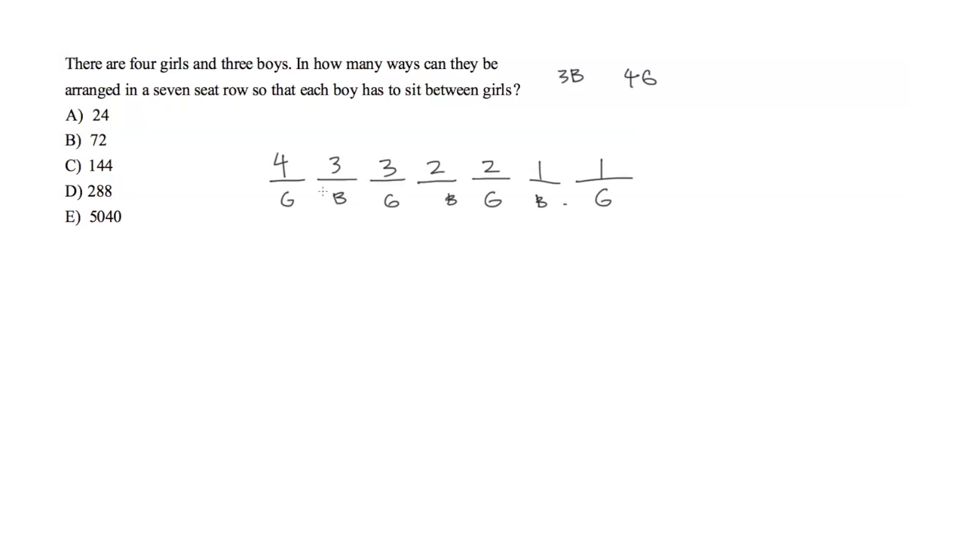Now since all of these have to be true, we have to have a girl sitting here, and here, and a boy sitting here, and a girl sitting here, and a boy, and a girl, and a boy and a girl again. We use the word and, and any time you use the word and we are going to multiply.